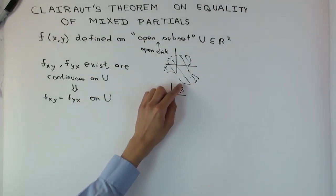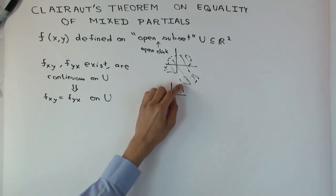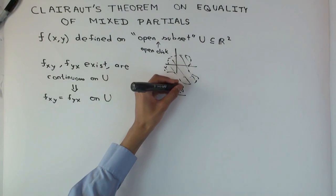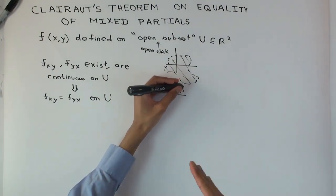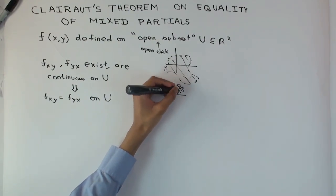It's an open set which means there's no boundary issue. The reason we don't want points at the boundary is because you can't differentiate along certain directions that aren't on the inside of the domain.